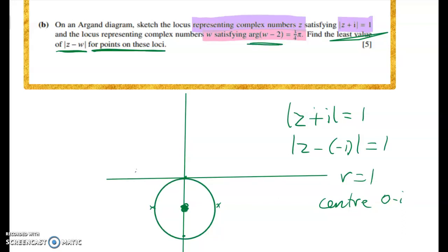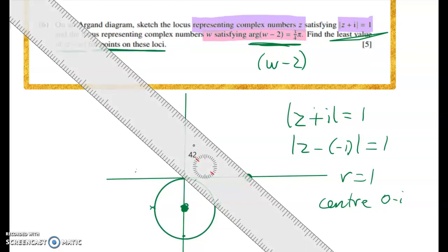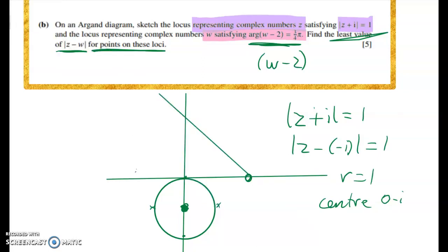Okay so here's my center of my circle. The next locus is going to be a half line so it's the angle—so the (w - 2) bit tells me that I'm starting out here at 2 and the angle is 3π/4 so that's 135 degrees. So this is a backwards 45 degree line if that makes any sense. So the half line is going to go like that and you can see our problem: we need to find the lowest value for points on those loci and they don't intersect.